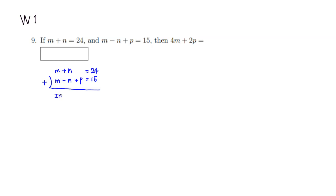You have 2m, and these two guys cancel out, so you get nothing. And then you still have p. And let's see, 4 plus 5 is 9, and 2 plus 1 is 3, so you have 39.